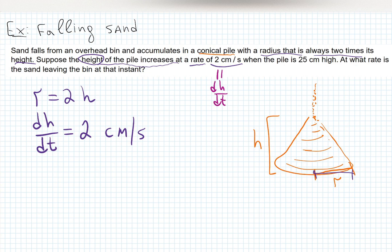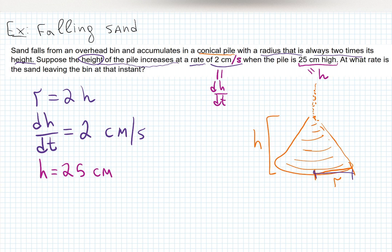This is dh/dt equals two — not h equals two — because of the 'per second' and the slash. Then it says 'when the pile is 25 centimeters high.' There's no slash, no 'per,' no increasing or changing, so this is not a rate. It's a moment in time: h equals 25 centimeters.